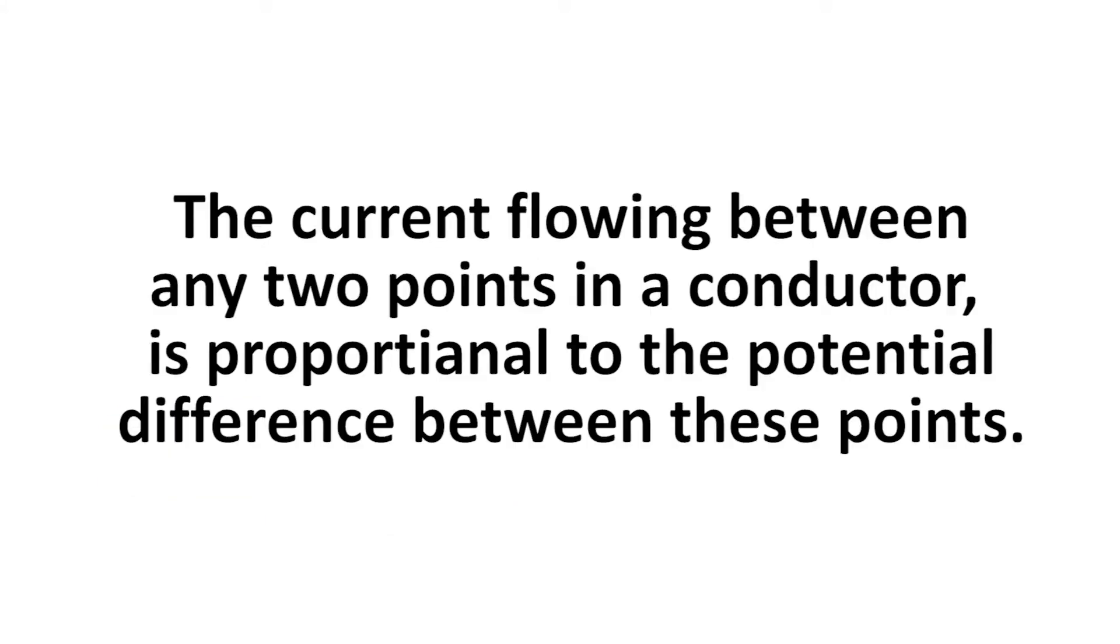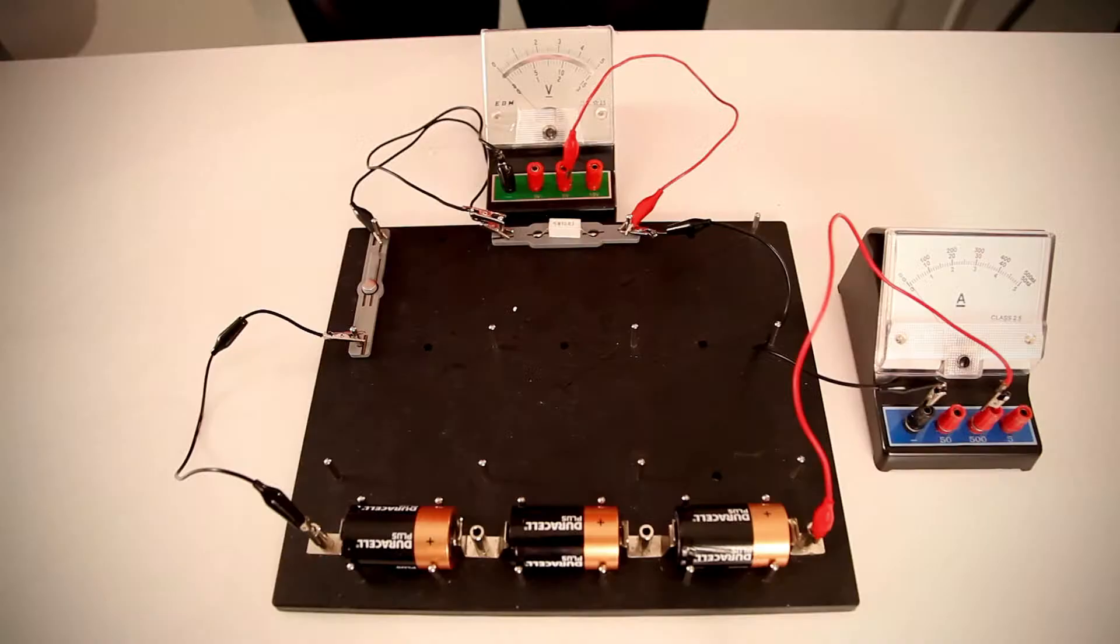Ohm's law states that the current flowing between any two points in a conductor is proportional to the potential difference between these points, provided that the physical conditions remain constant. Ohm's law can be proved by using the following method.